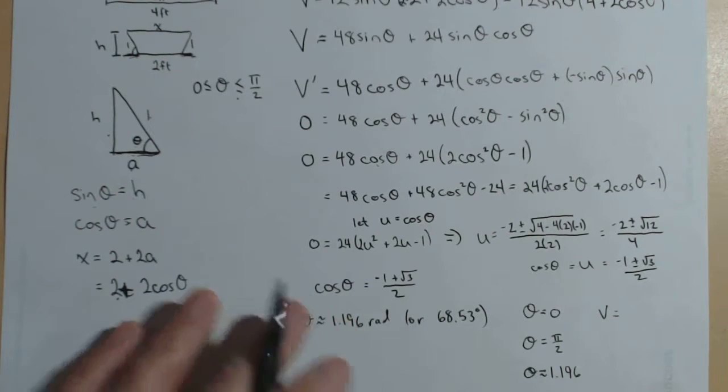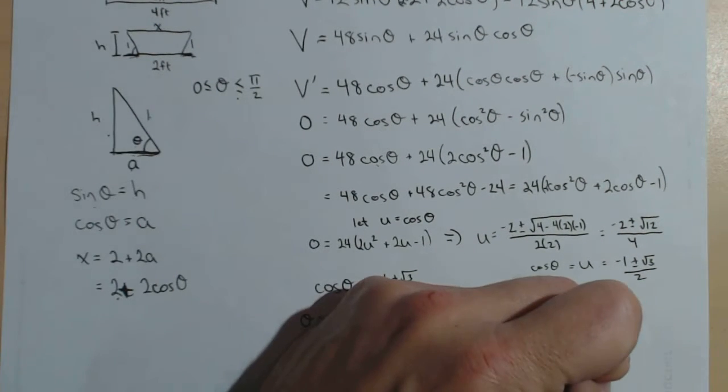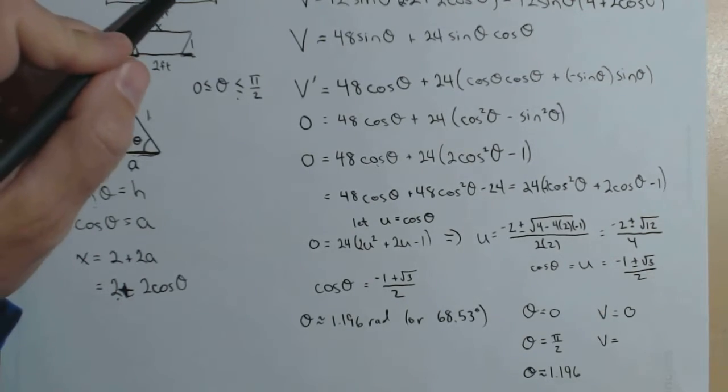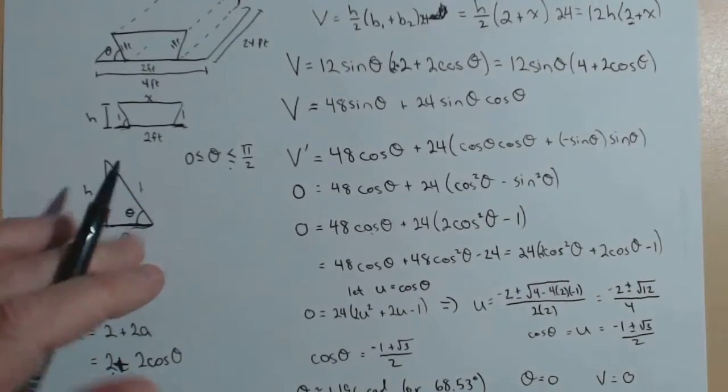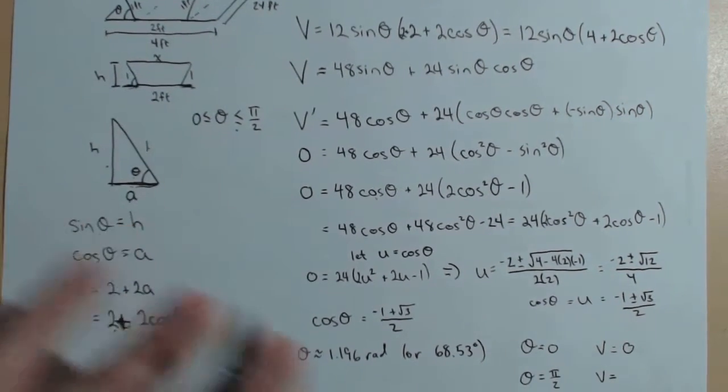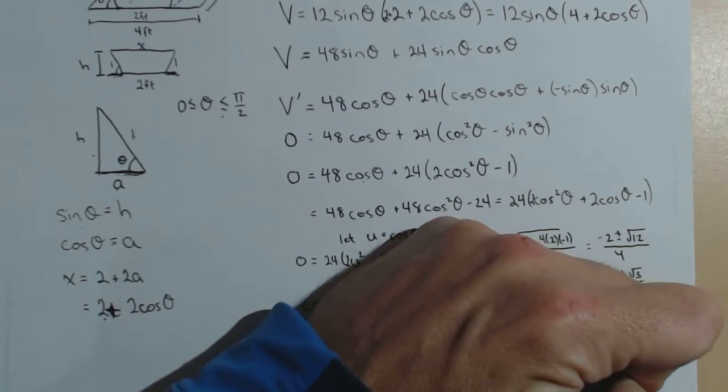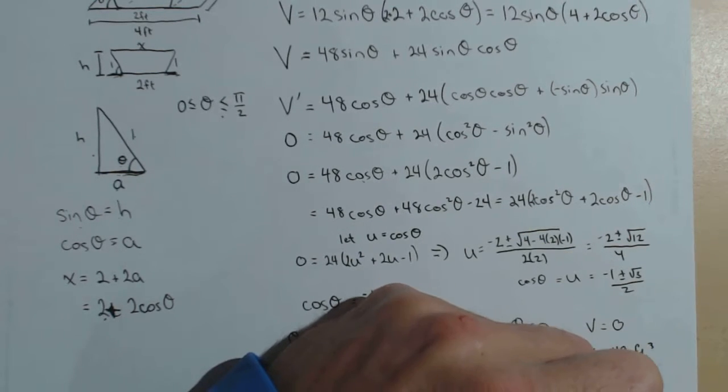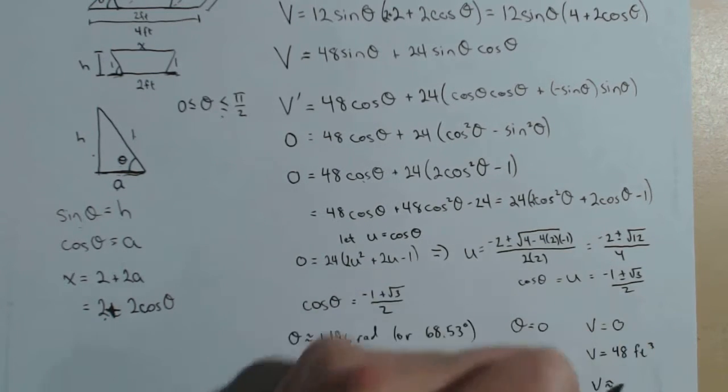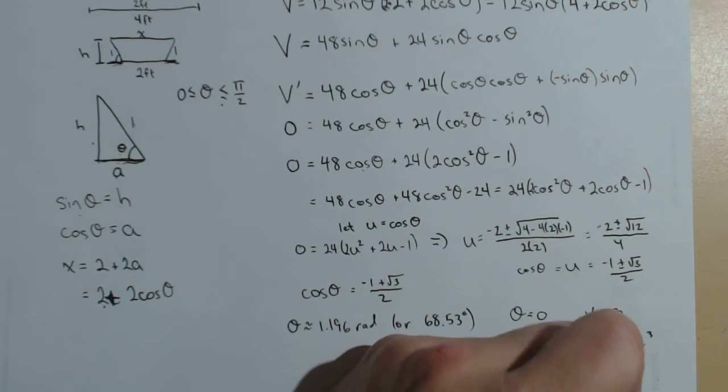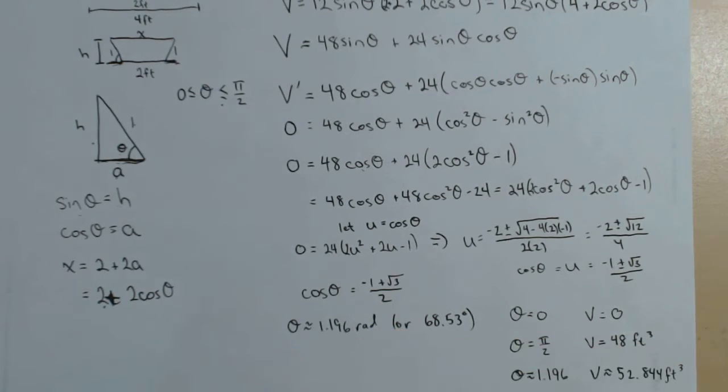Well, if theta is 0, there is no box at all, so the volume is 0. If theta is pi over 2, it's just a rectangular box, because these sides will be straight up, and it turns out that the volume would be 48 cubic feet. Finally, if it's about 1.196, that's where we're going to actually have our maximum volume, because it turns out the volume comes out to be 52.844 cubic feet.